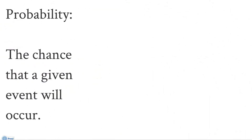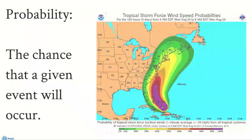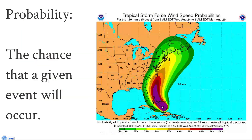Probability, simply put, is the chance that a given event will occur. If we look at this weather chart, we see that there are different probabilities expressed as percentages for various wind speeds affecting various parts of the country. This is probability expressed as a percentage. There are a lot of other ways to express probability — let's talk about a few of them.